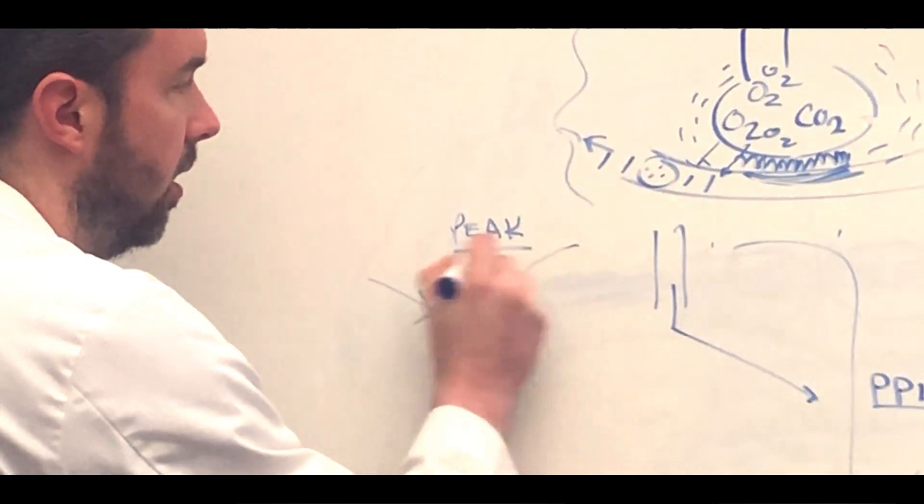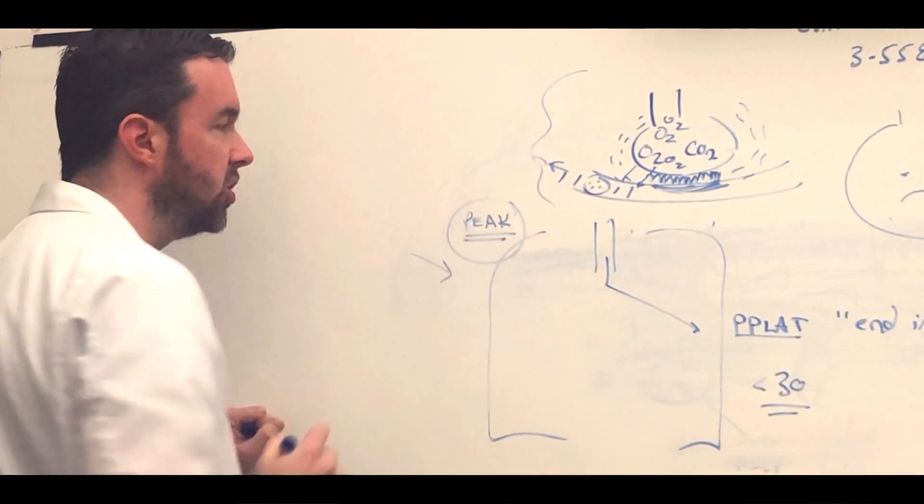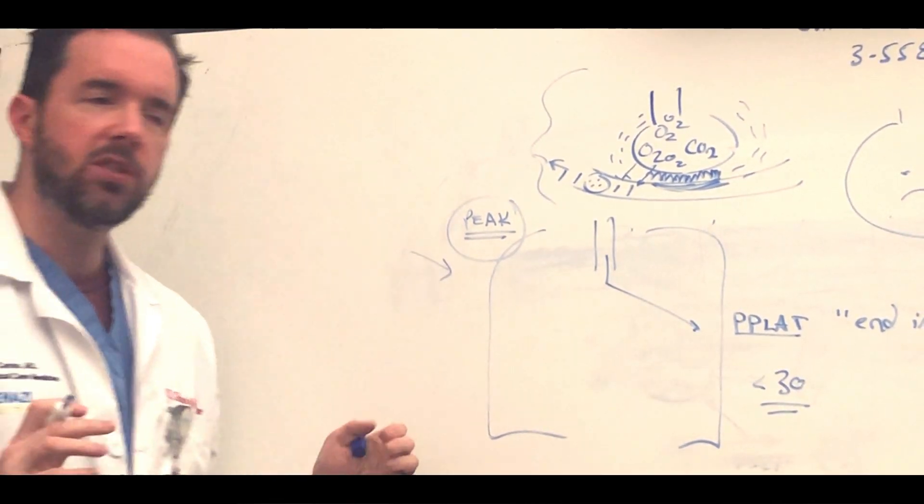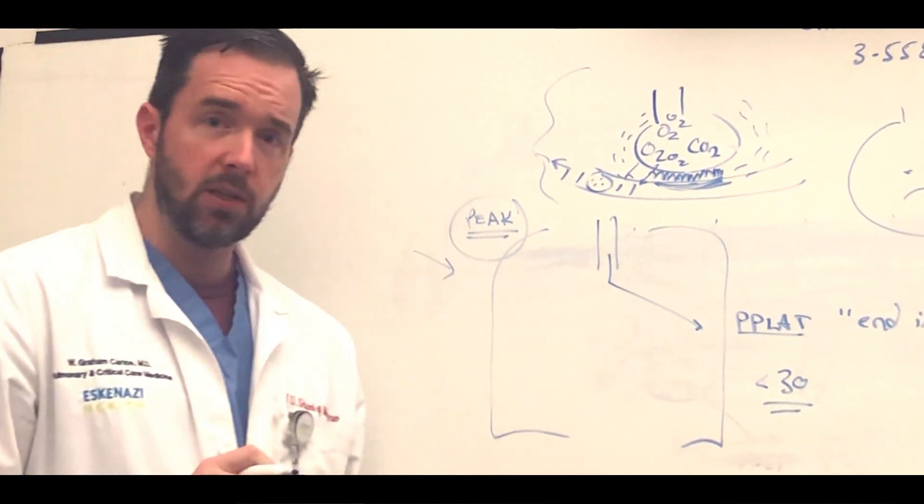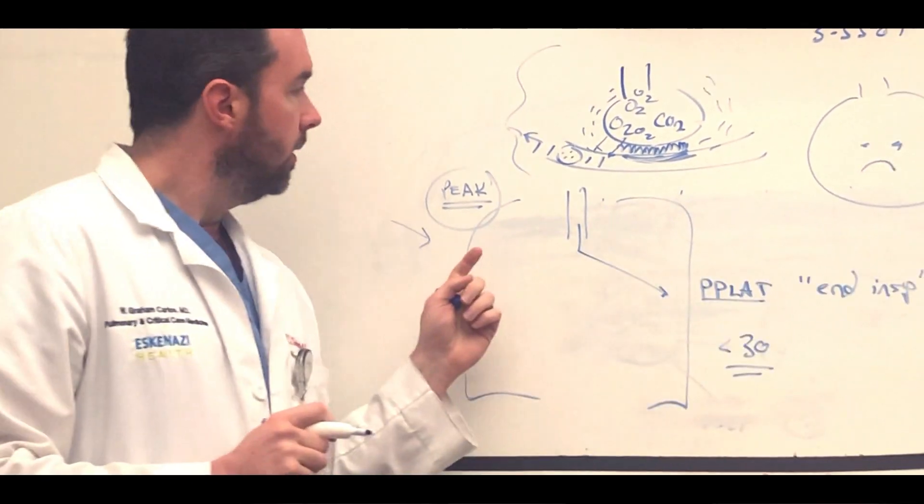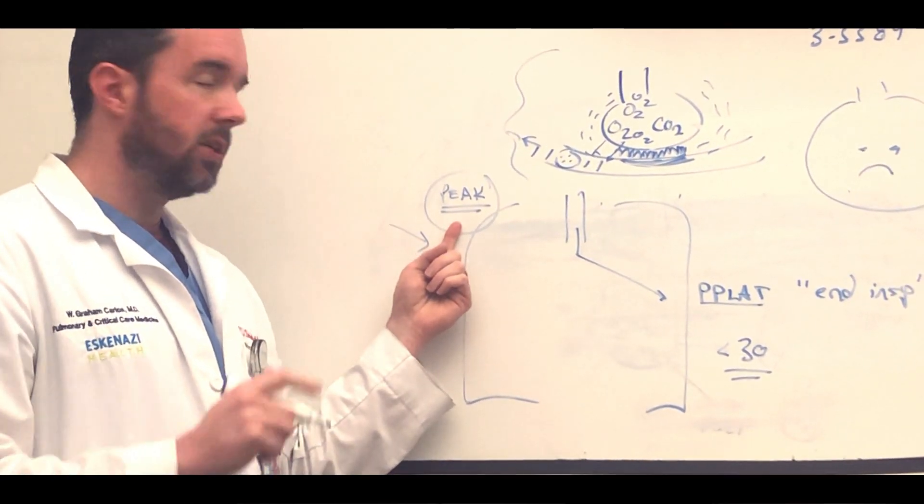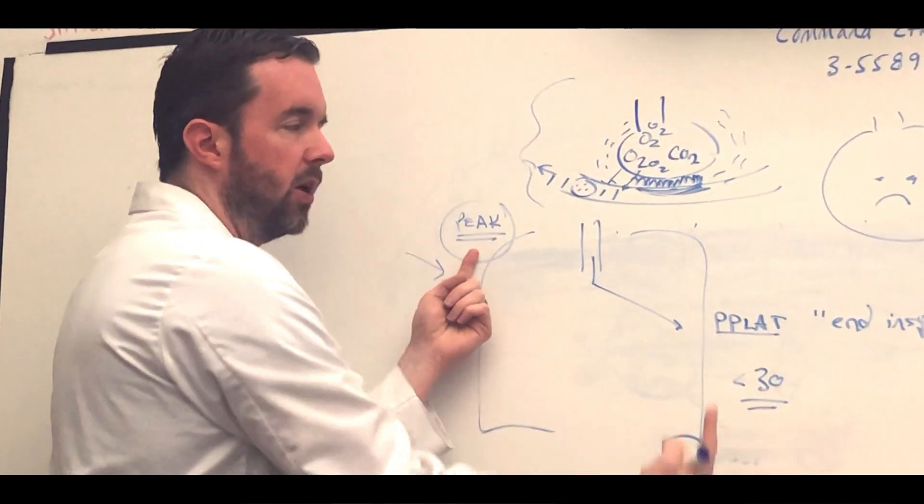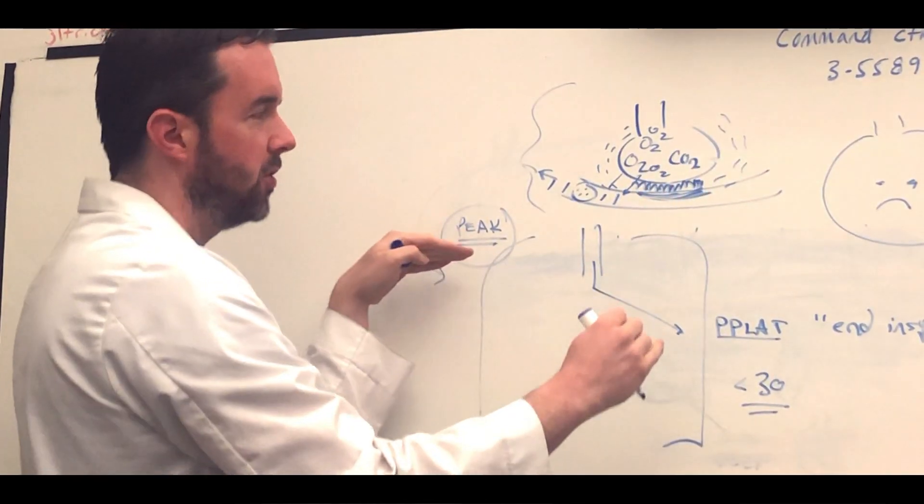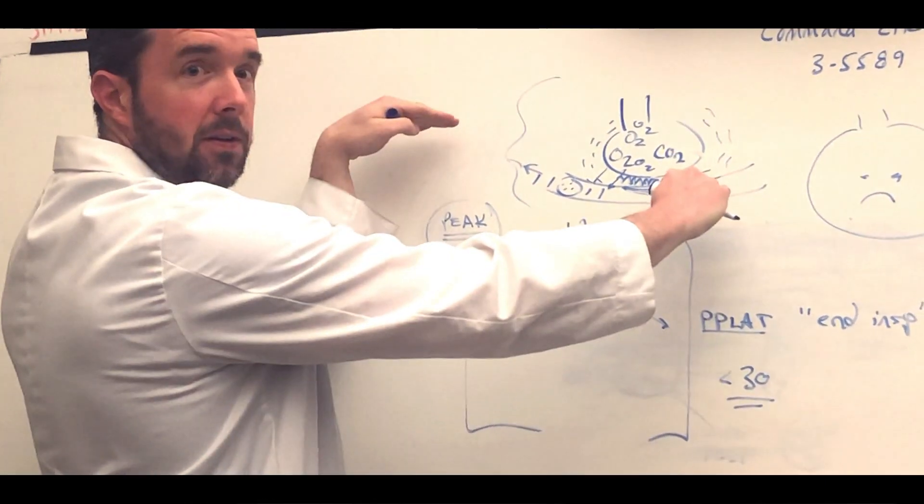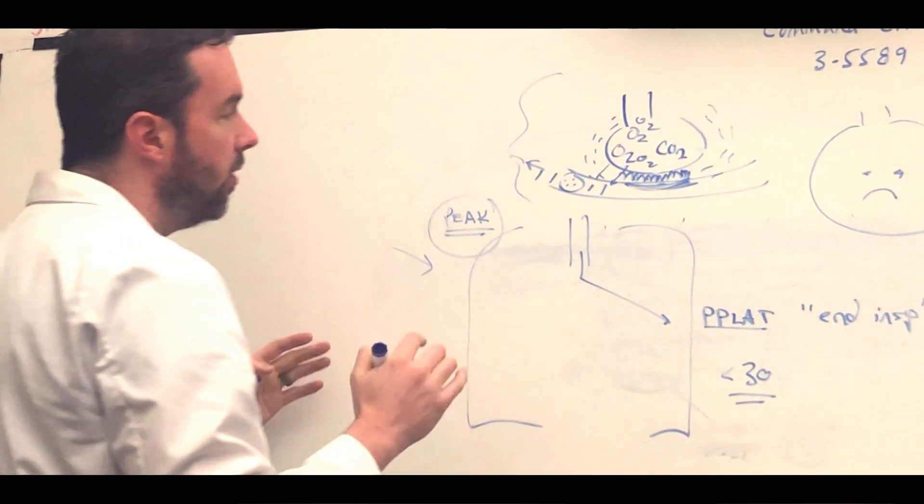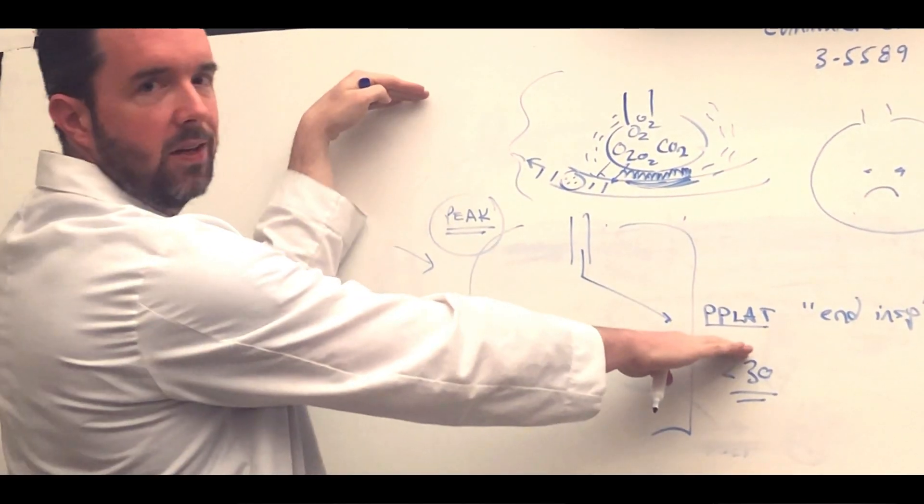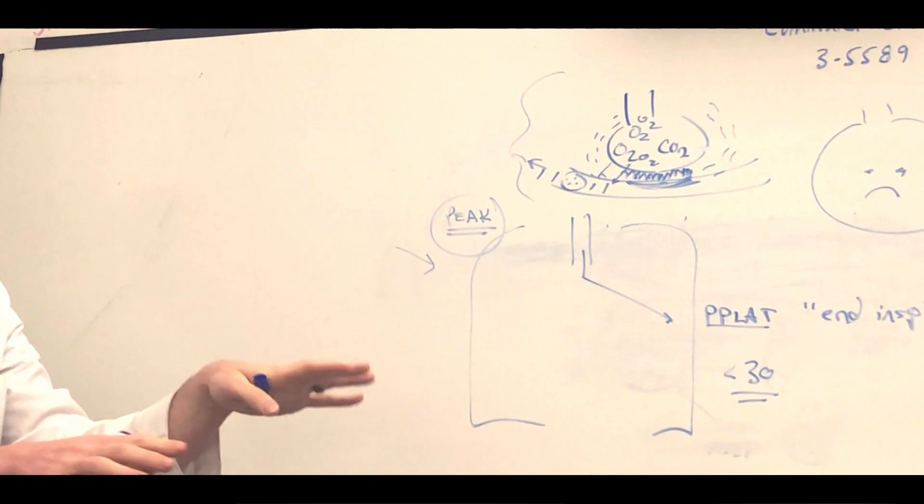Another pressure to become familiar with on ventilators is the peak pressure, P-E-A-K. The peak pressure is going to be the highest pressure that the ventilator records as air is going to the patient. Here's the concept you need to understand. The peak pressure is always the highest pressure. So if the plateau pressure rises, the peak pressure will also rise. They rise together.